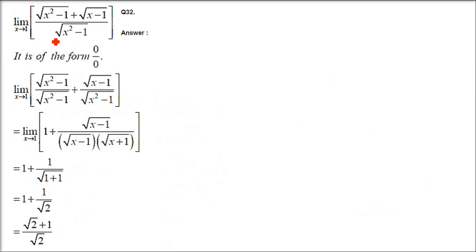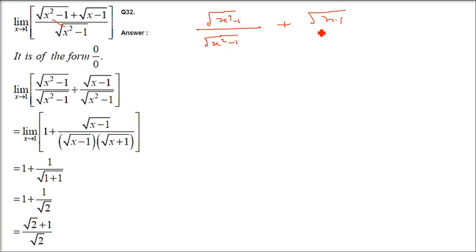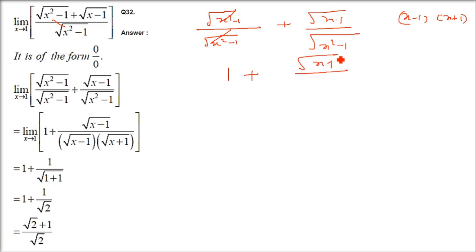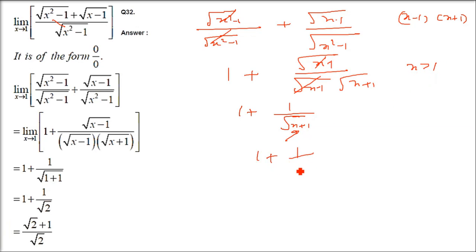Question number 32: limit as x tends to 1 of (√(x²-1) + √(x-1))/√(x²-1). Take the denominator √(x²-1) with both numerator terms separately. We get 1 + √(x-1)/√(x²-1). Since x²-1 = (x-1)(x+1), we have √(x²-1) = √(x-1)·√(x+1). Cancel √(x-1), giving 1 + 1/√(x+1). Since x > 1, put x = 1: 1 + 1/√2 = (√2 + 1)/√2.